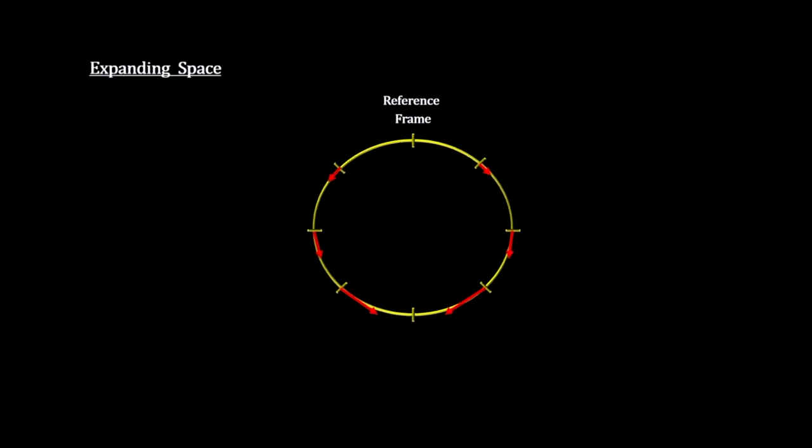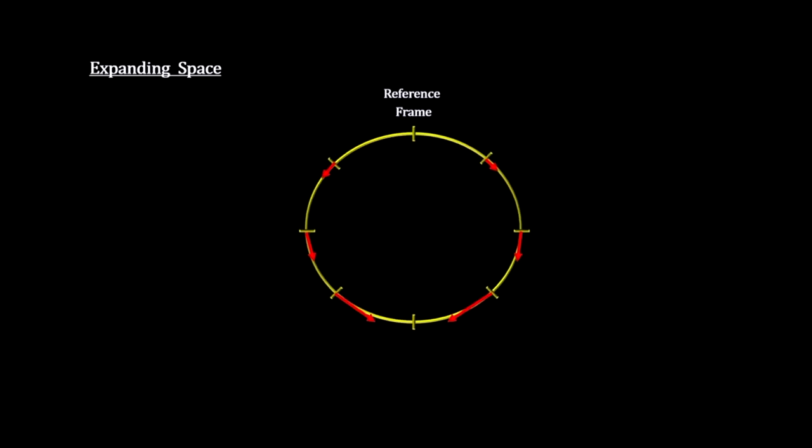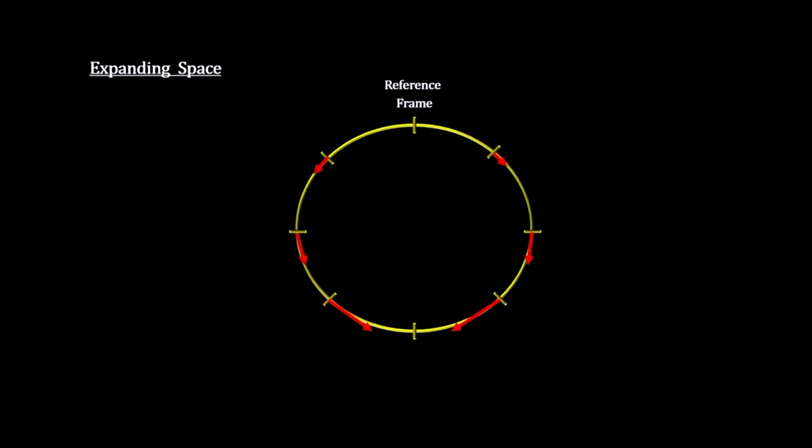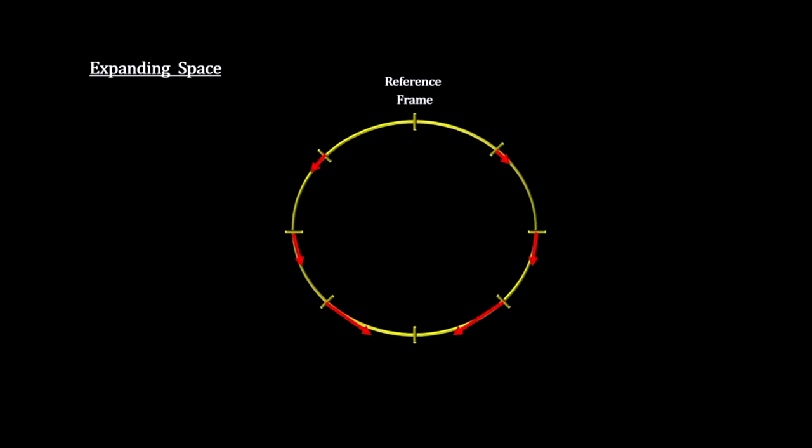But, if the apparent motion is due to the amount of space expanding, we get a different picture. Here, the marks hold their position on the line, but the line grows.